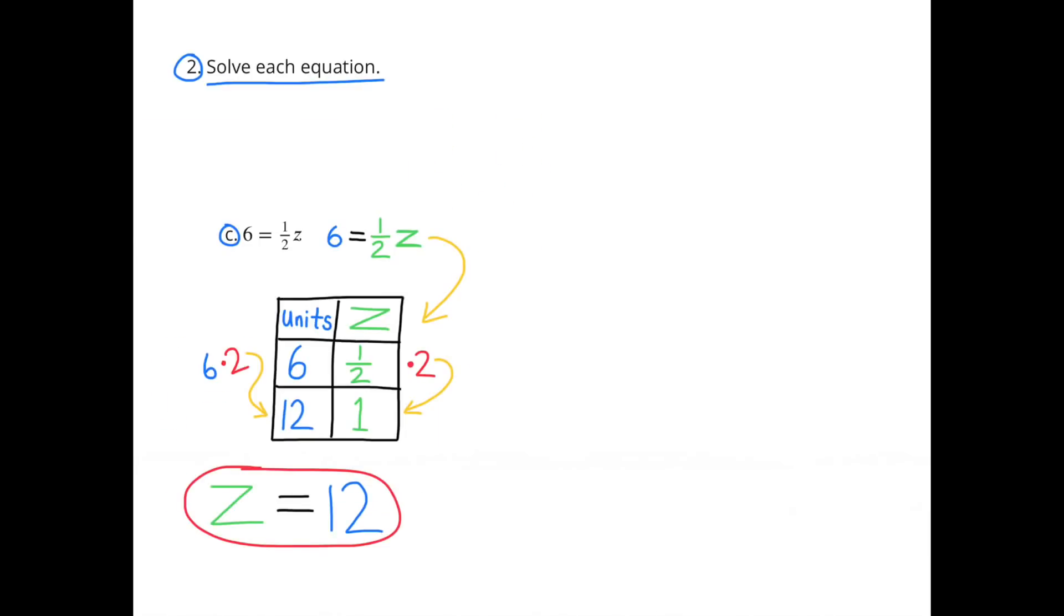Problem C: 6 equals 1 half z. On the right-hand side, I have the number of z's. On the left-hand side, I have the number of units. 6 units equals 1 half z. In order to make 1 full z, I had to multiply that 1 half by 2. 1 half times 2 equals 1. I also needed to multiply the 6 units by 2. And 6 times 2 equals 12. Since 6 units equals 1 half z, 12 units equals 1 z. z equals 12.